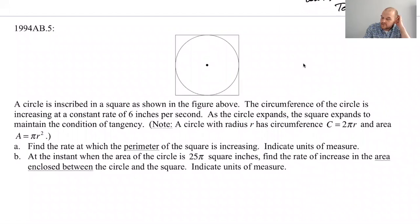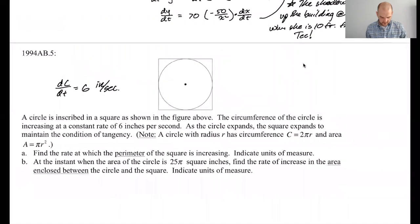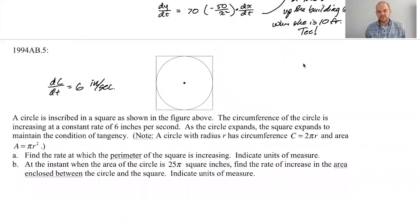Circle inscribed in a square, shown in the picture, okay? Circumference of the circle is increasing at a constant rate of six inches per second. And so that's telling me that dc/dt is 6 inches per second. I like to, when I'm reading the problem, write down everything that was given and see if I can get a sense of the problem, like what's happening.